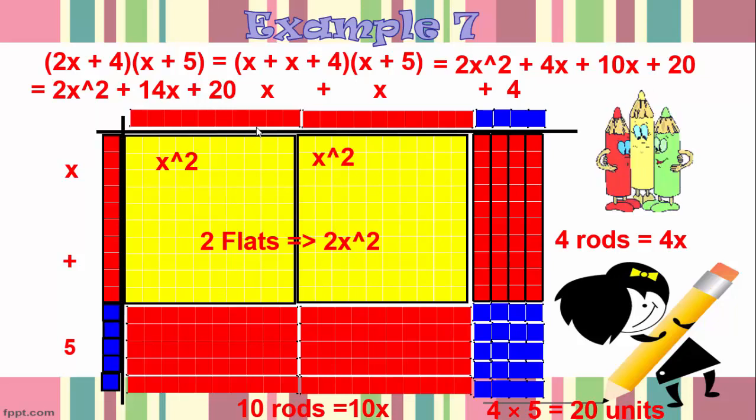That is what I would get after I multiply 2x plus 4 times x plus 5 using the area method.